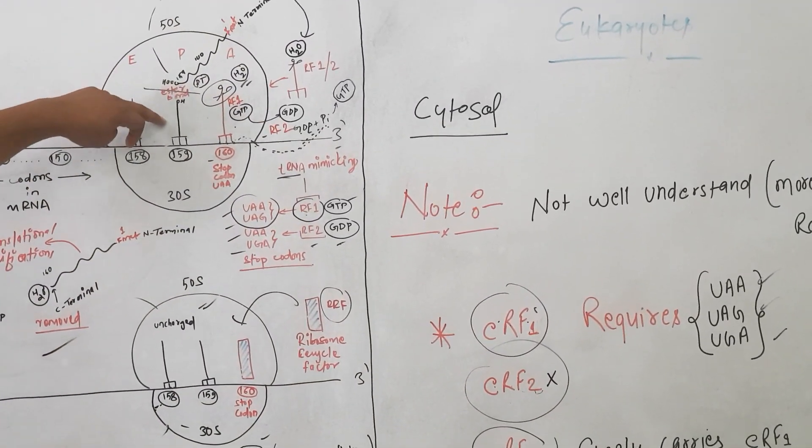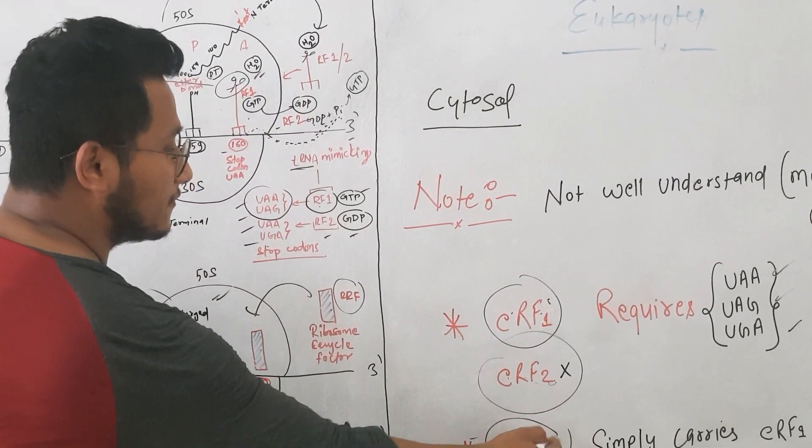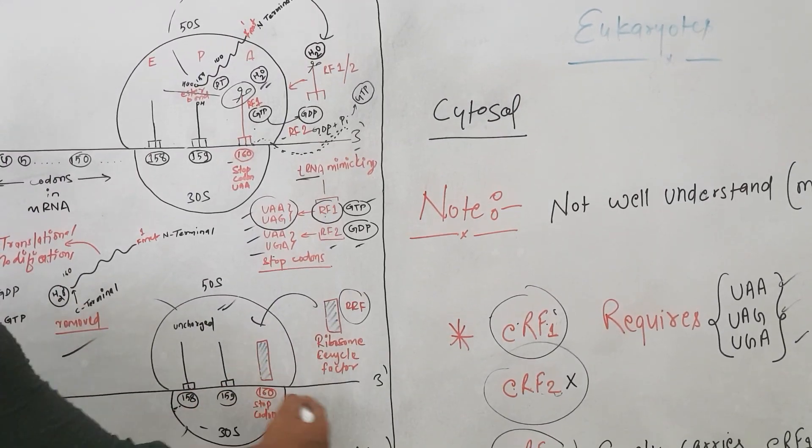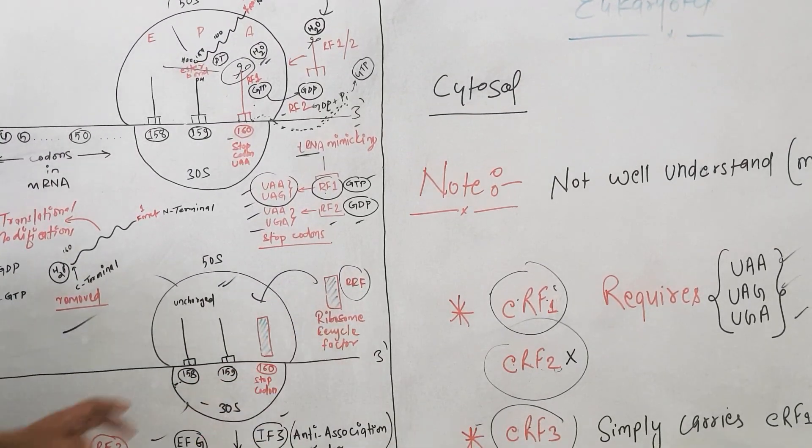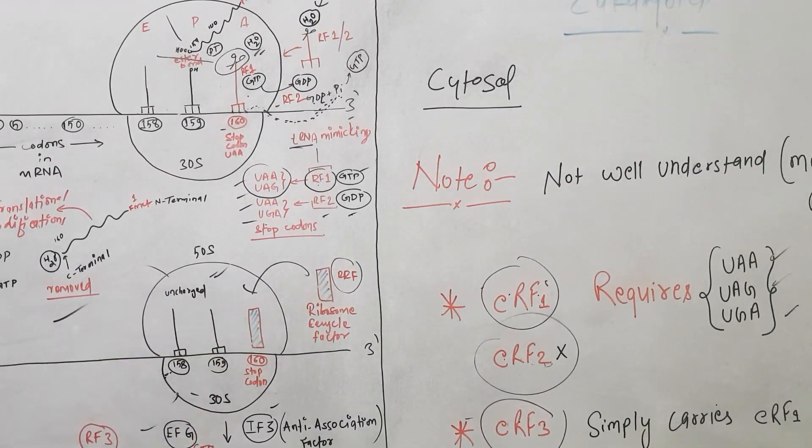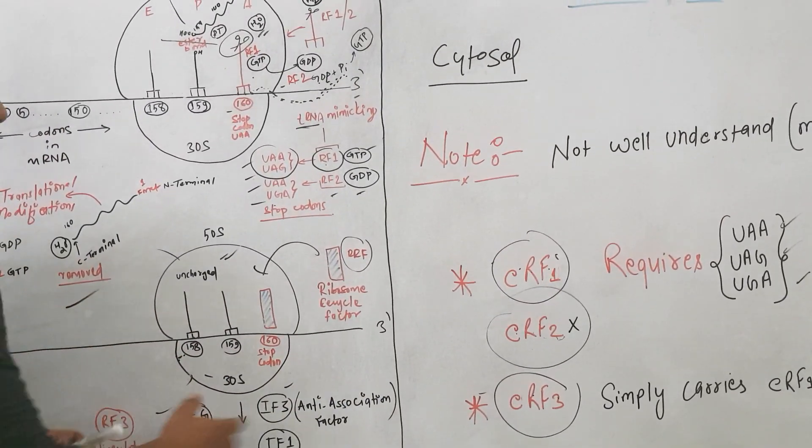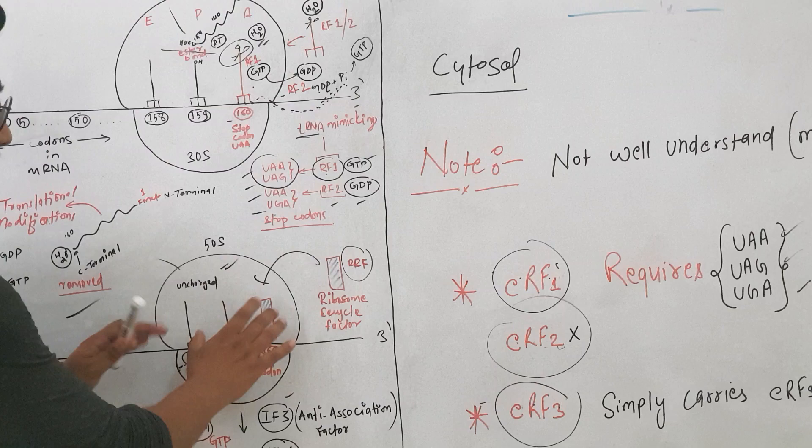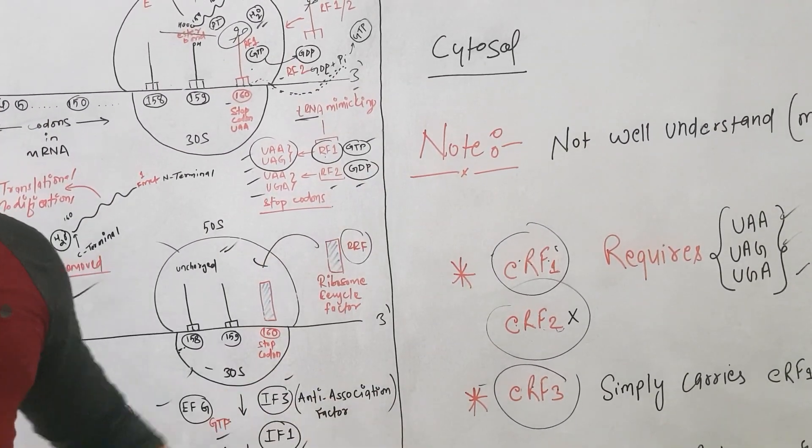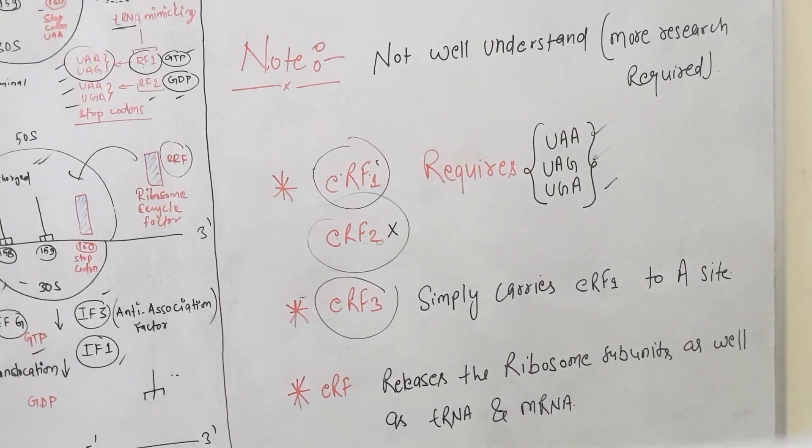It is the same process. These will be removed, and then RF3 and RF1 will also be removed. Ultimately, again the same step. Here in case of eukaryotes, the step is not clearly understood. The ribosome recycling factor will come and dissociate all the components. This step is not well understood in case of eukaryotes. So this was the termination of prokaryotes and eukaryotes.